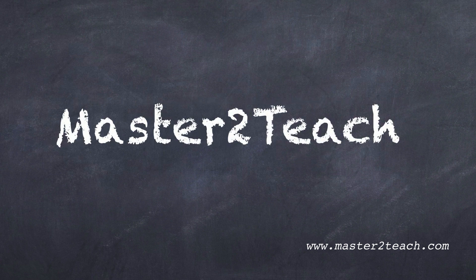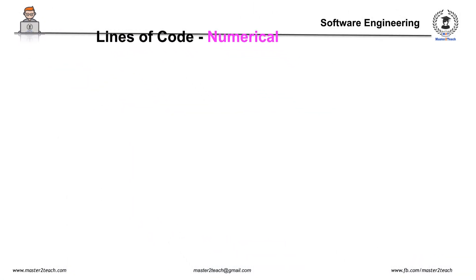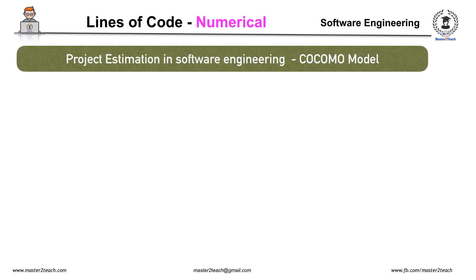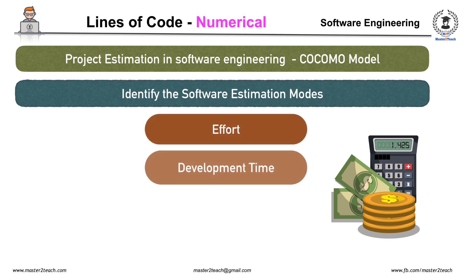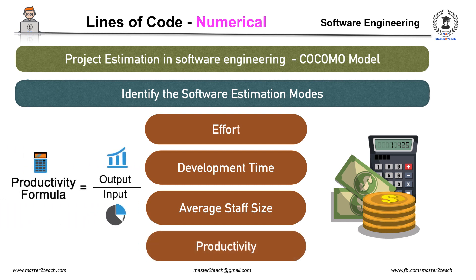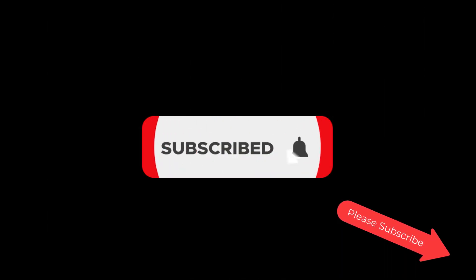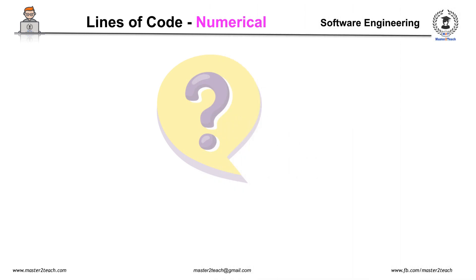Hello everyone, welcome to Master2Teach step-by-step guide. In the previous video you learned about project estimation in software engineering using the COCOMO model. In this video tutorial you will learn how to identify the modes of development for software estimation, and how to calculate the effort, development time, average staff size required for the software development, and its productivity as well.